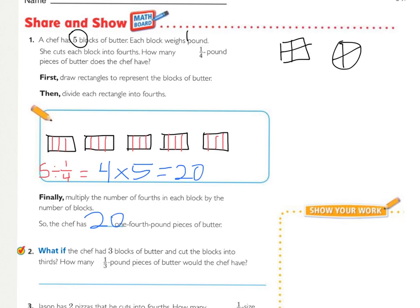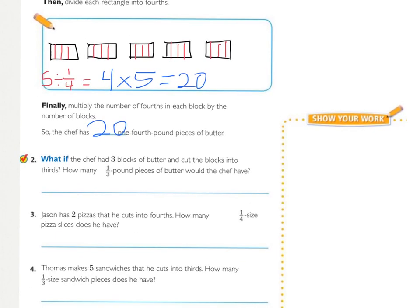Now looking at number two, basing off of the picture again, what if the chef had three blocks of butter and cut the blocks into thirds? How many one-third pieces of butter would the chef have? You use the exact same steps. So on number two, three blocks of butter. One, two, three squares. Cut into thirds. One, two, three. One, two, three. One, two, three. And then I had three times three, and that gave me the total of nine.